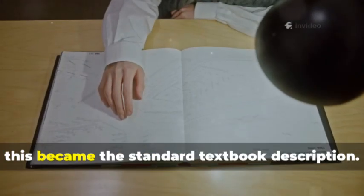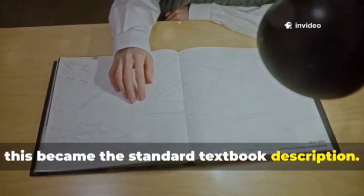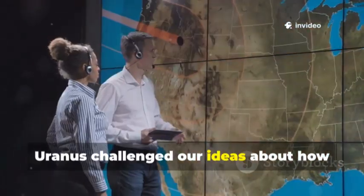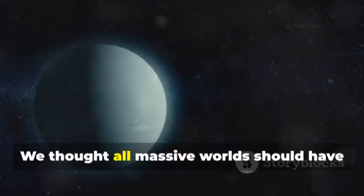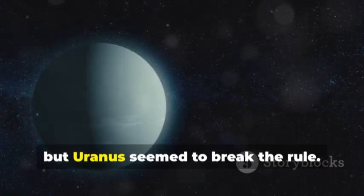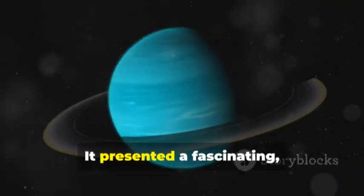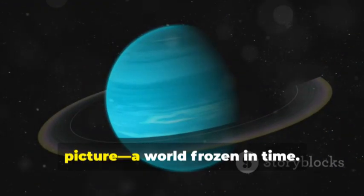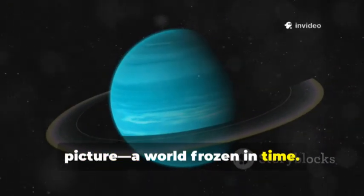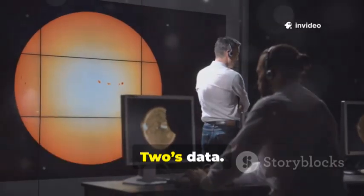For decades this became the standard textbook description. Uranus challenged our ideas about how giant planets form and evolve. We thought all massive worlds should have hot cores but Uranus seemed to break the rule. It presented a fascinating if static picture, a world frozen in time. This was the story written by Voyager 2's data.